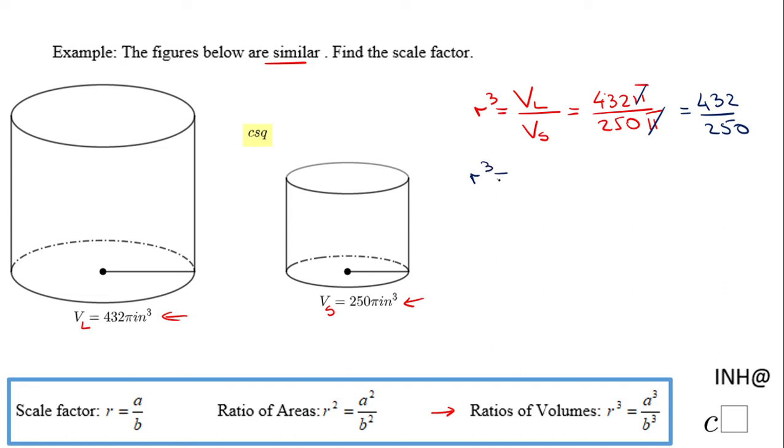and see if any of these numbers is a perfect cube. None of them is a perfect cube, but both are even numbers so they're divisible by 2. I suggest dividing by 2: 432 divided by 2 is 216, and 250 divided by 2 is 125.